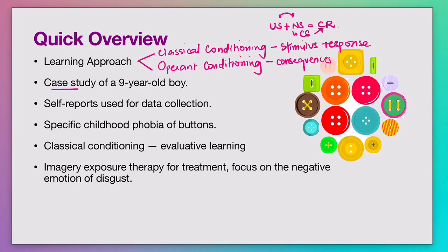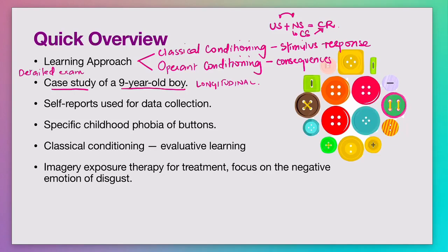A case study is a very focused and detailed examination of a small unit — either one person or a small group of people. In this study, the unit was a nine-year-old boy. This was a longitudinal study, meaning it went on for a period of time. There is also a cross-sectional method, where you examine a phenomenon at a single point in time in great detail, zeroing in on a small unit.